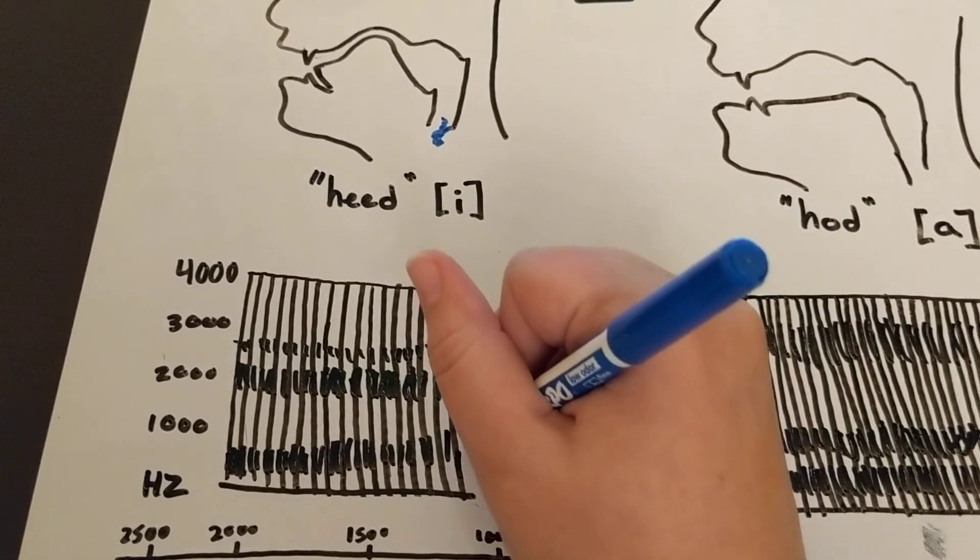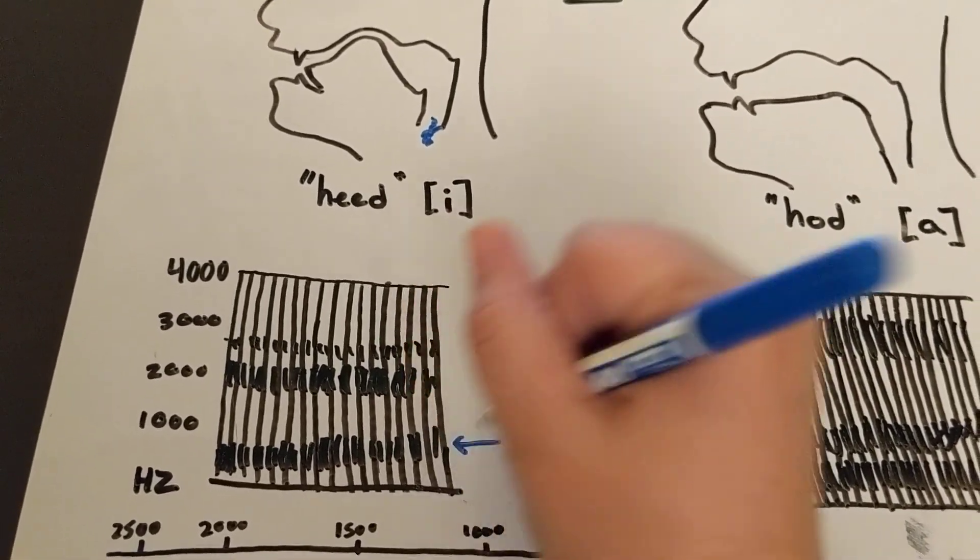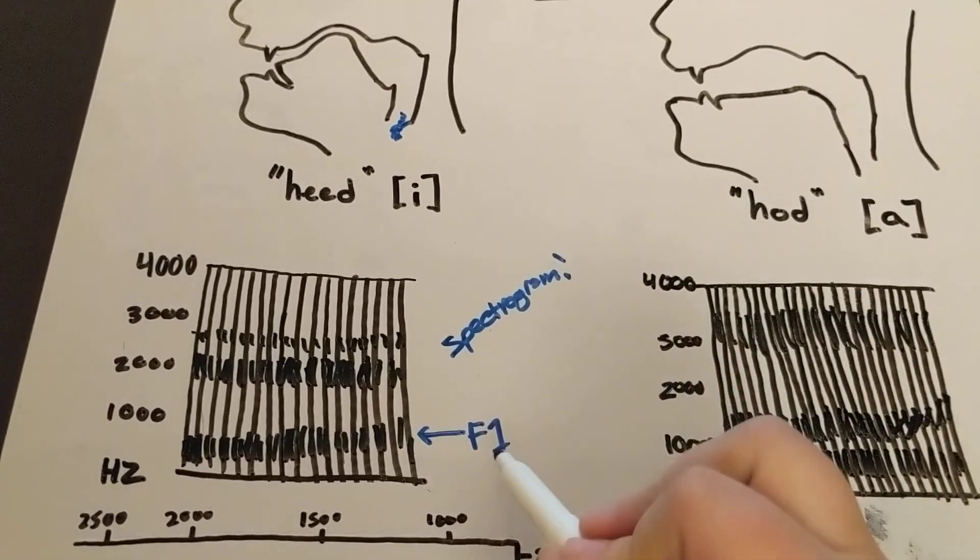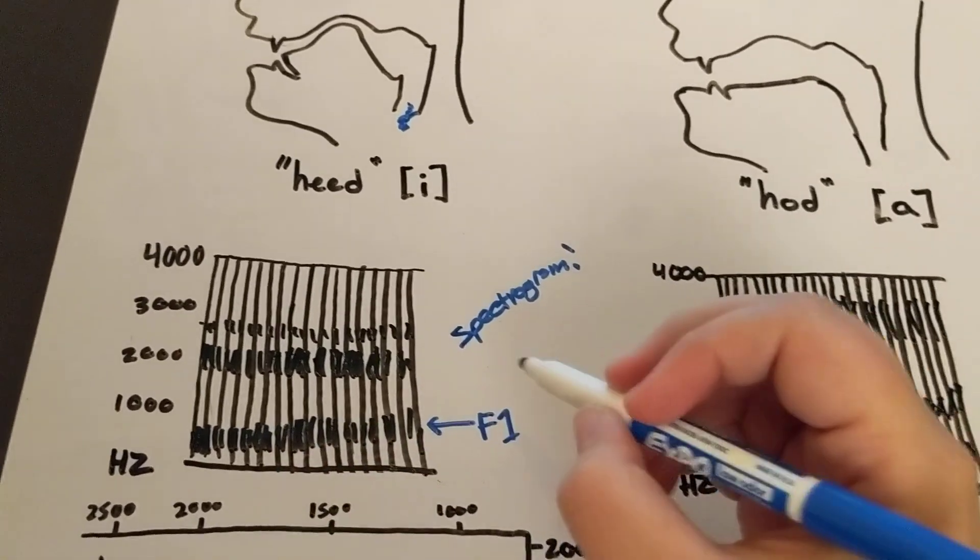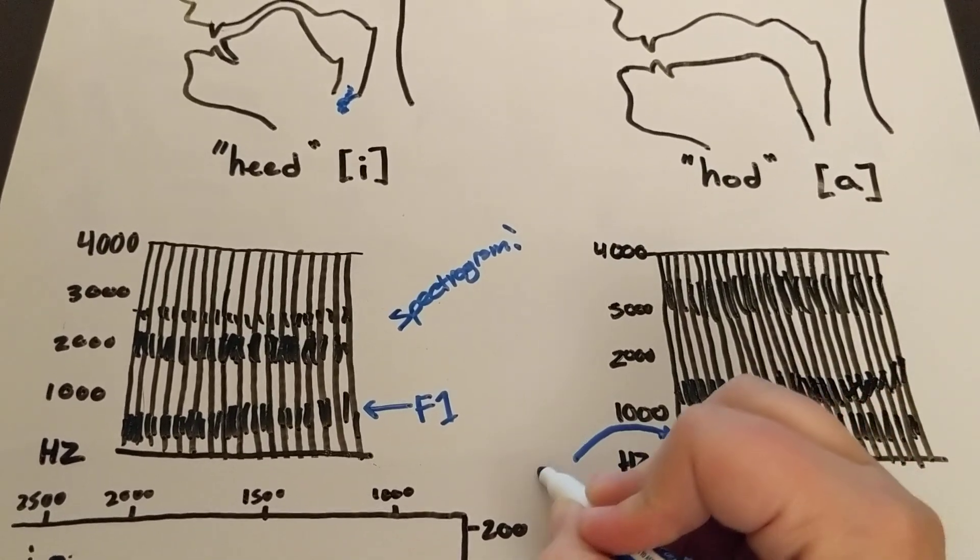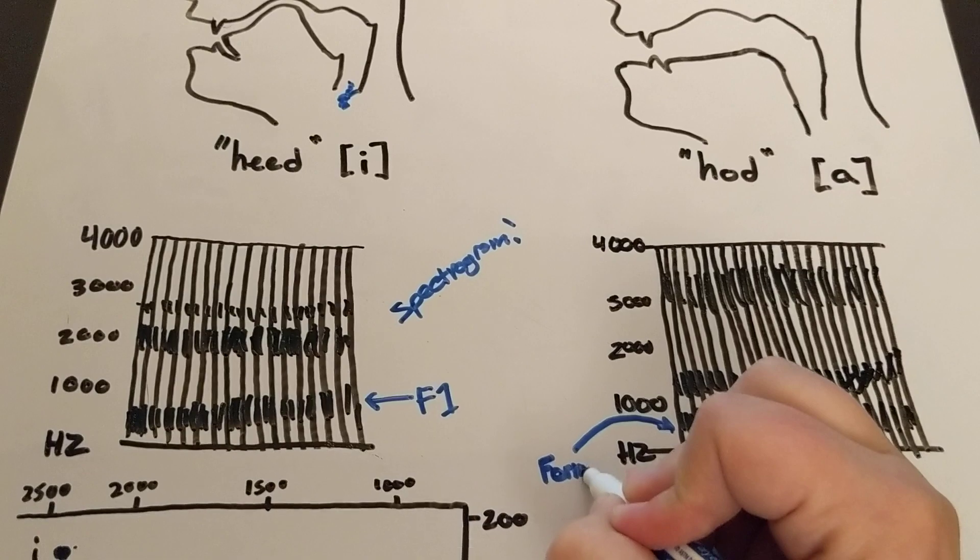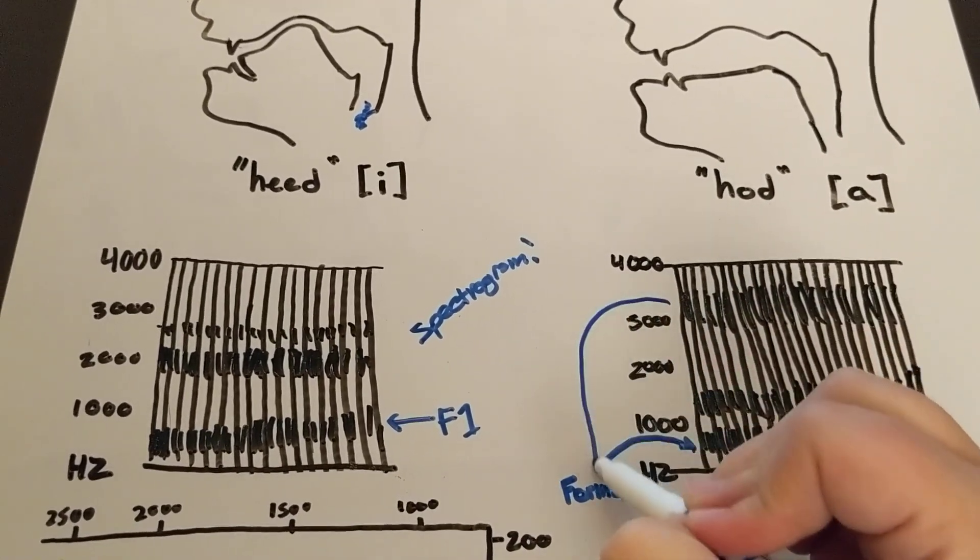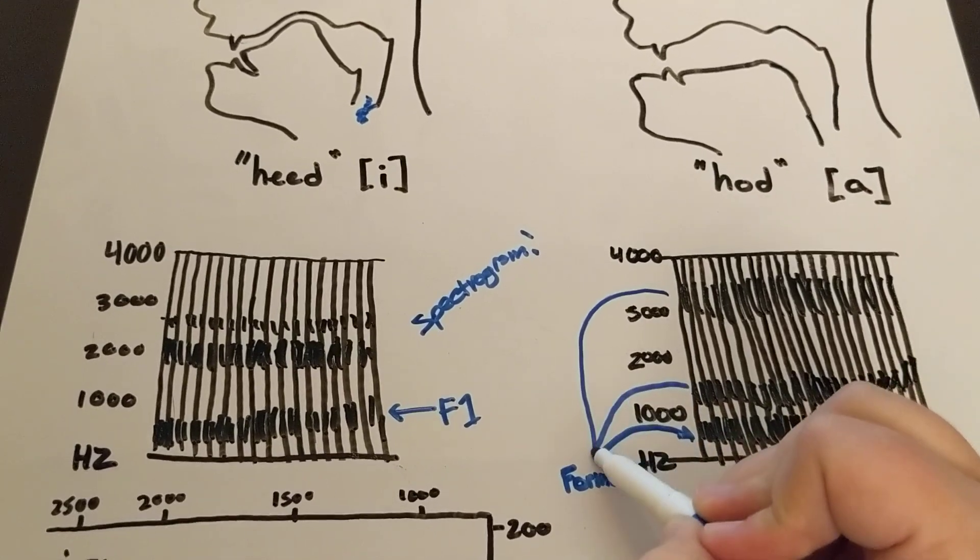Usually when we're looking at this, we call this F1. That's formant 1. So these lines are our formants, right? So here, I'll label it here. That's a formant. This is a formant. And this is a formant. These are all formants.